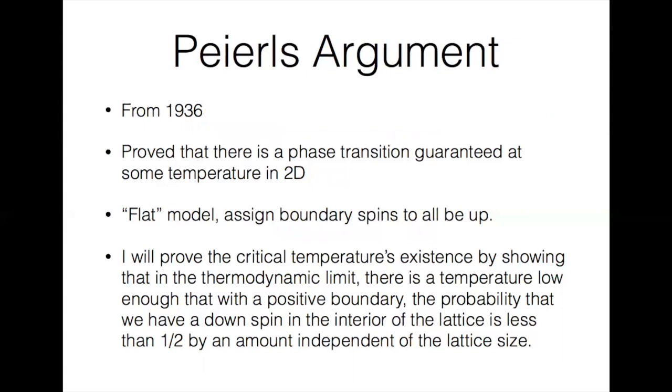Our setup is the flat model where we have a boundary and we will set all of the boundary spins to be up. When we let the boundary move off to infinity, i.e. n approaches infinity, which we call the thermodynamic limit, that is the equivalent to having the magnetic field disappear.